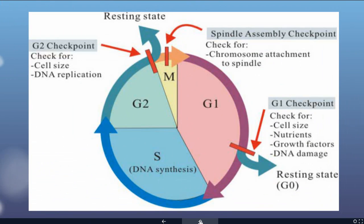This graphic shows three key checkpoints — think of these as red lights in the cell cycle. The first one is G1, where the cell checks if it's big enough, if it has enough nutrients, if it's receiving growth factor signals from other parts of the body, and whether the DNA is damaged. If any of these things are not okay, the light will never turn green, and that cell will go into the G0 state.